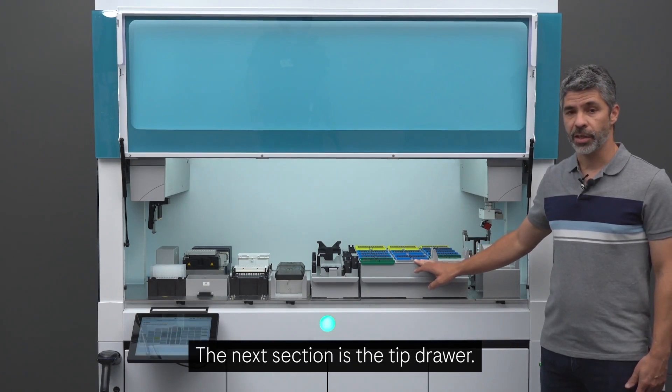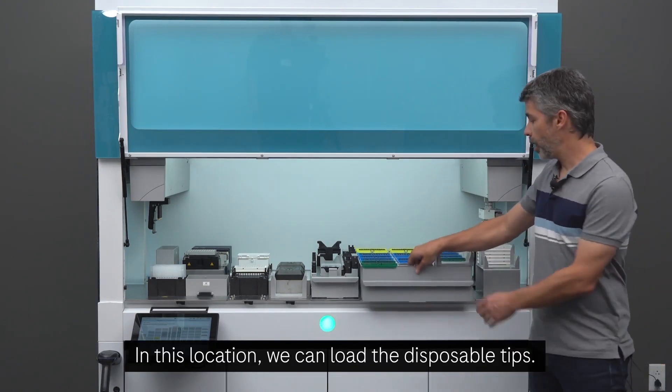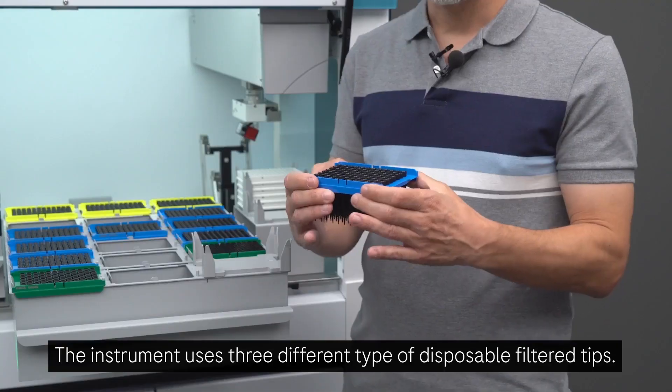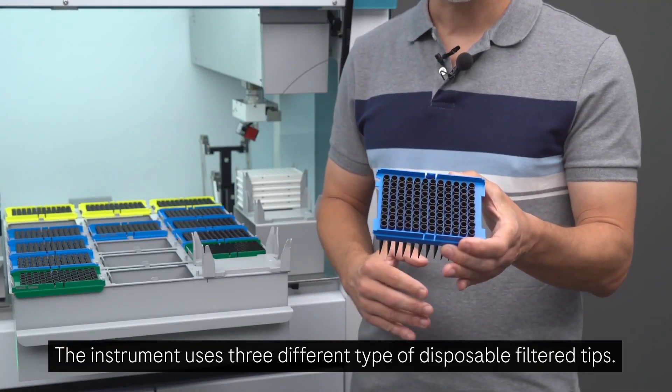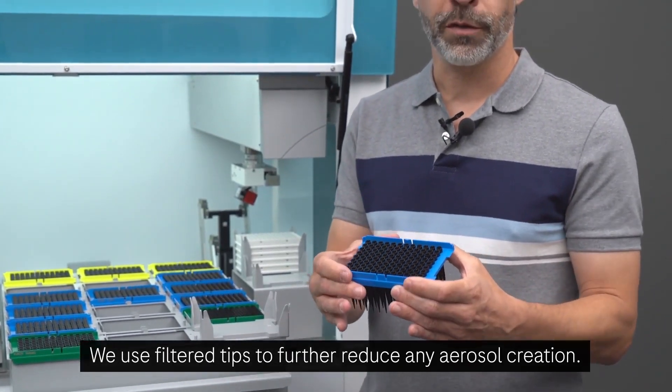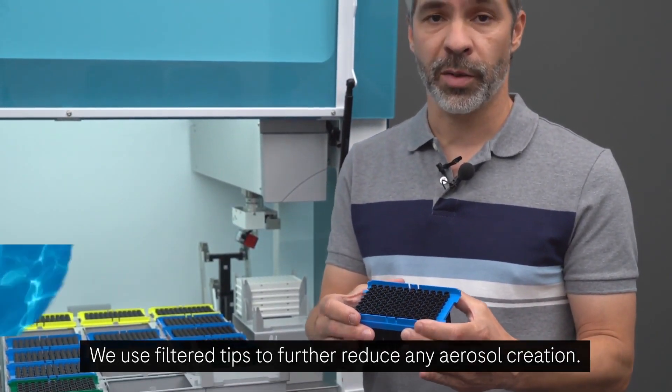The next section is the tip drawer. In this location, we can load the disposable tips. The instrument uses three different types of disposable filter tips. We use filter tips to further reduce any aerosol creation.